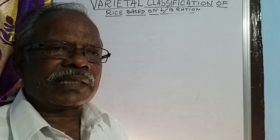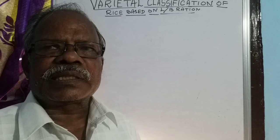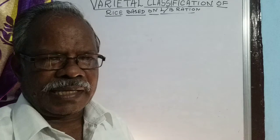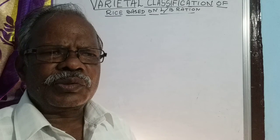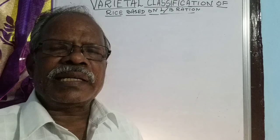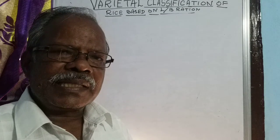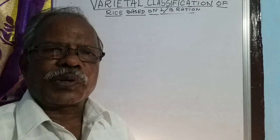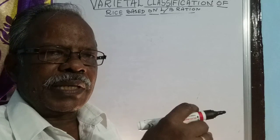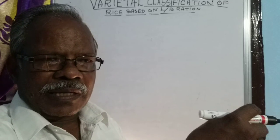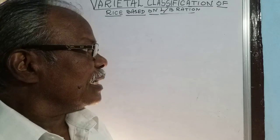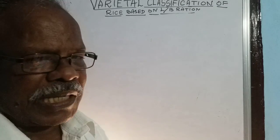As regards FCI, it has nothing to do with the variety name in procurement of rice. Only two varieties — Grade A and Common — are fixed, and based on that alone the procurement is made and payment is also made. The difference between Grade A and Common is approximately 50 rupees.